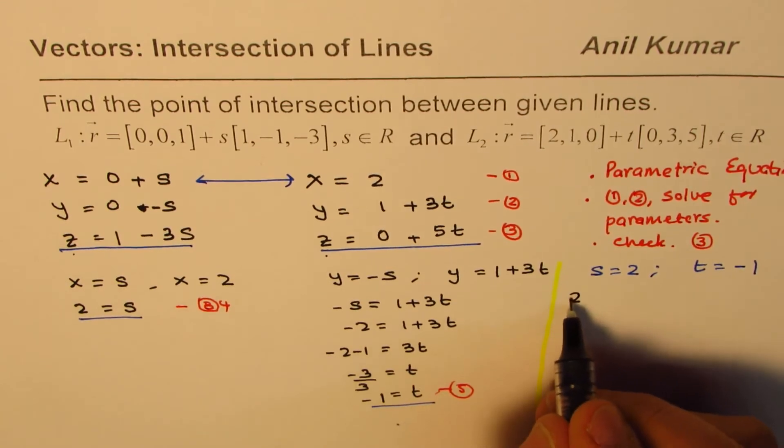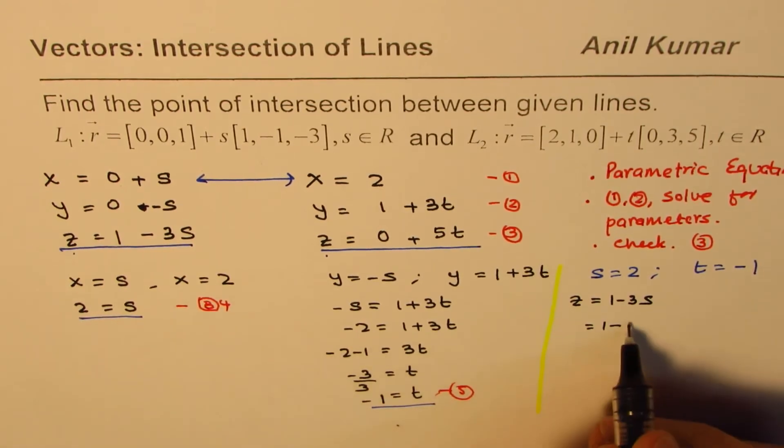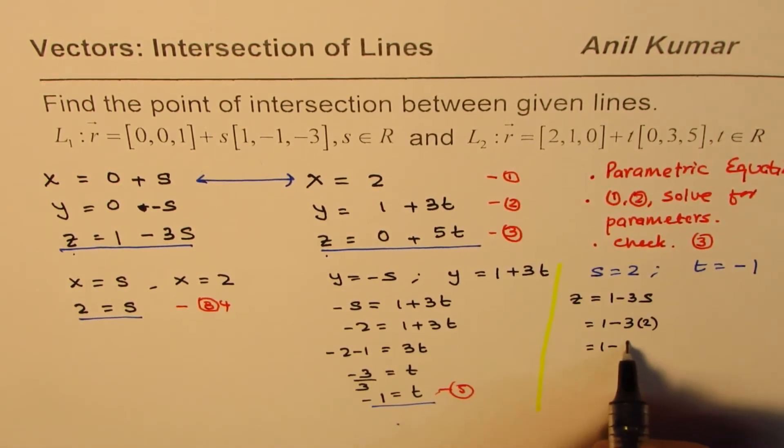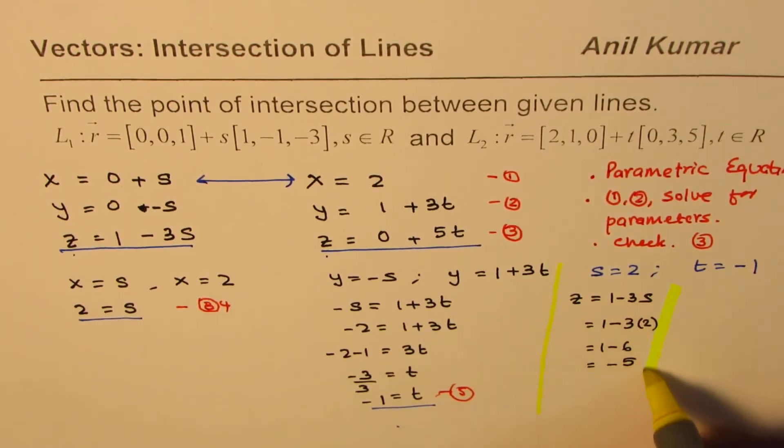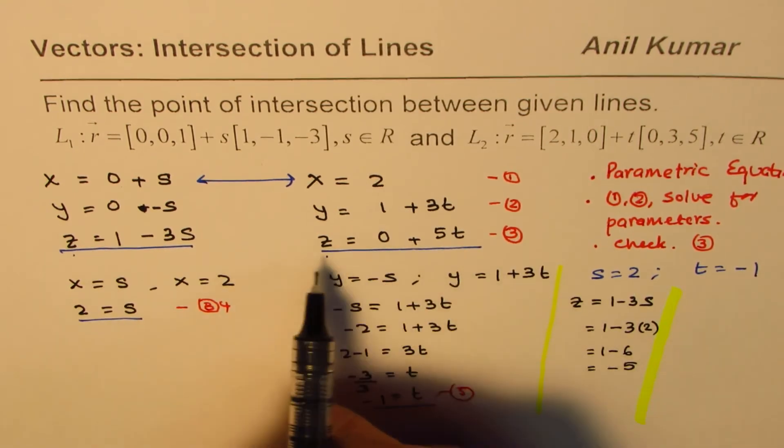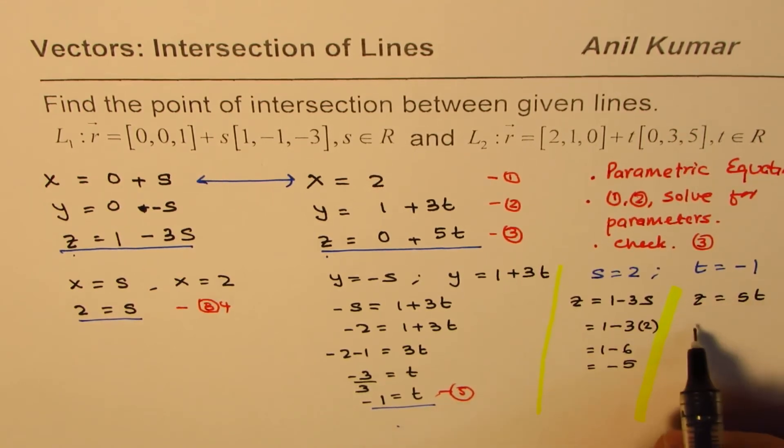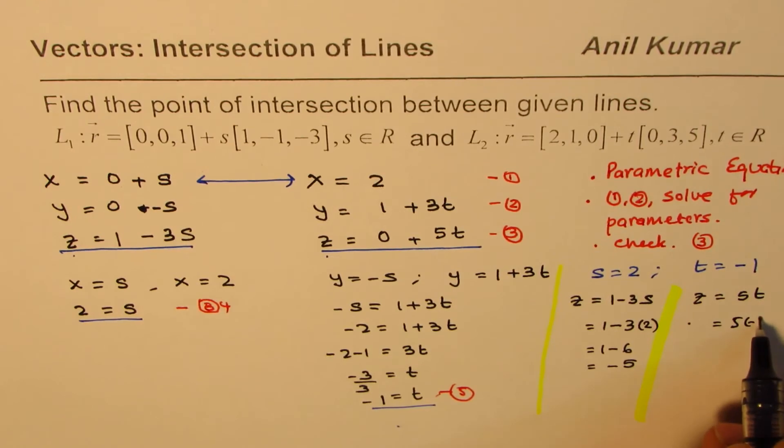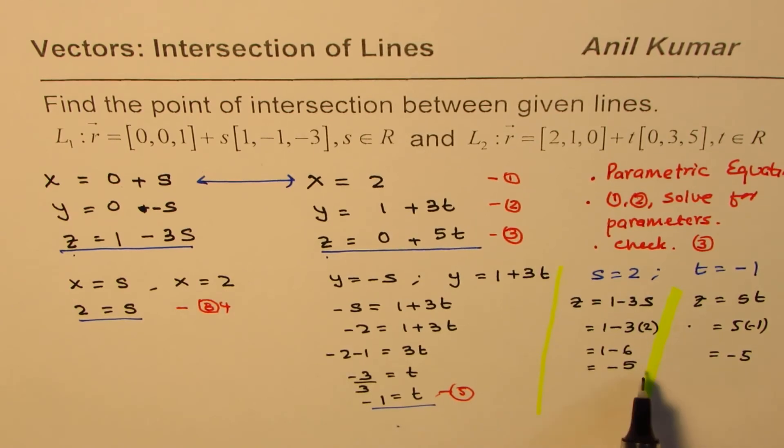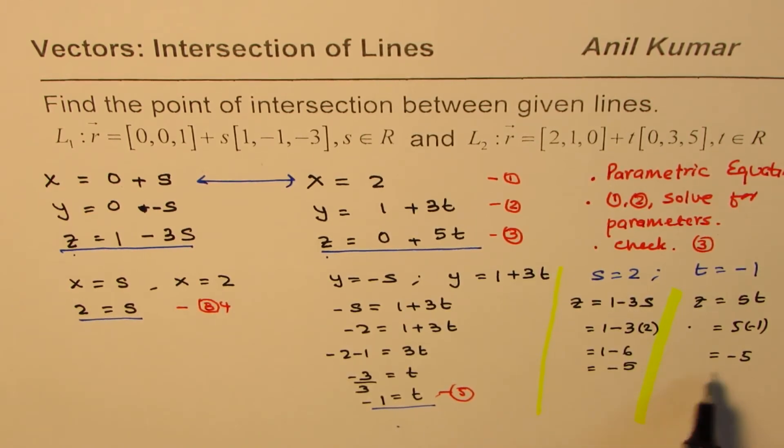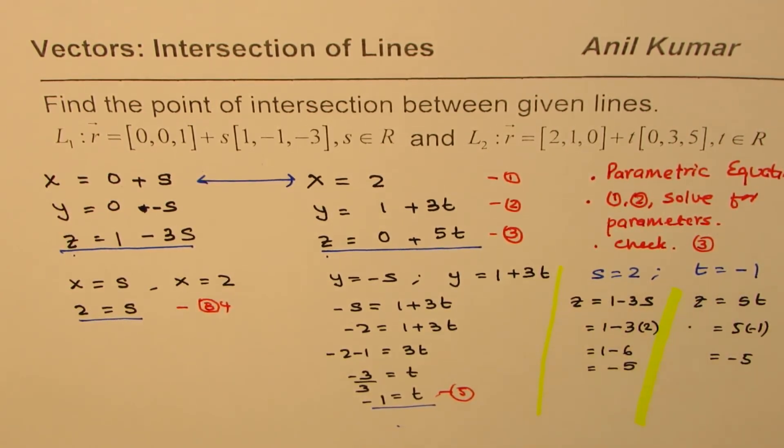So let us calculate. So from the first one, we know z equals 1 minus 3s, which should be 1 minus s is 2, 3 times 2, or 1 minus 6, and that gives us minus 5. Let us also find the value of z from this second set, from line 2. It says z equals 5 times t, and so that is equals 5 times minus 1, and that is indeed minus 5. So both values are same. So we get z value as exactly same. So that means there is a point of intersection since these parameters satisfy the condition.